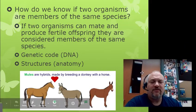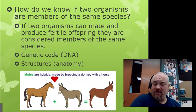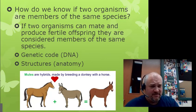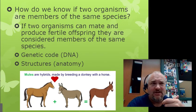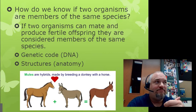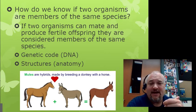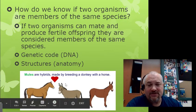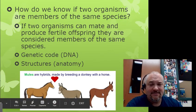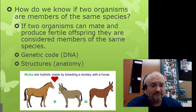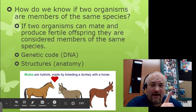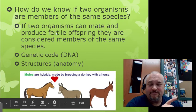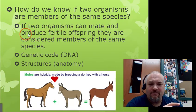That brings up a good point: how do we know if things are in the same genus or the same species? You could look at DNA, structures, and whether they look similar — that gets you close. But the end-all be-all is: can they mate, like this horse and this donkey, and produce offspring like this mule? If they can actually mate, their DNA is pretty close, so they might be the same species. But here's the kicker: did they produce fertile offspring?